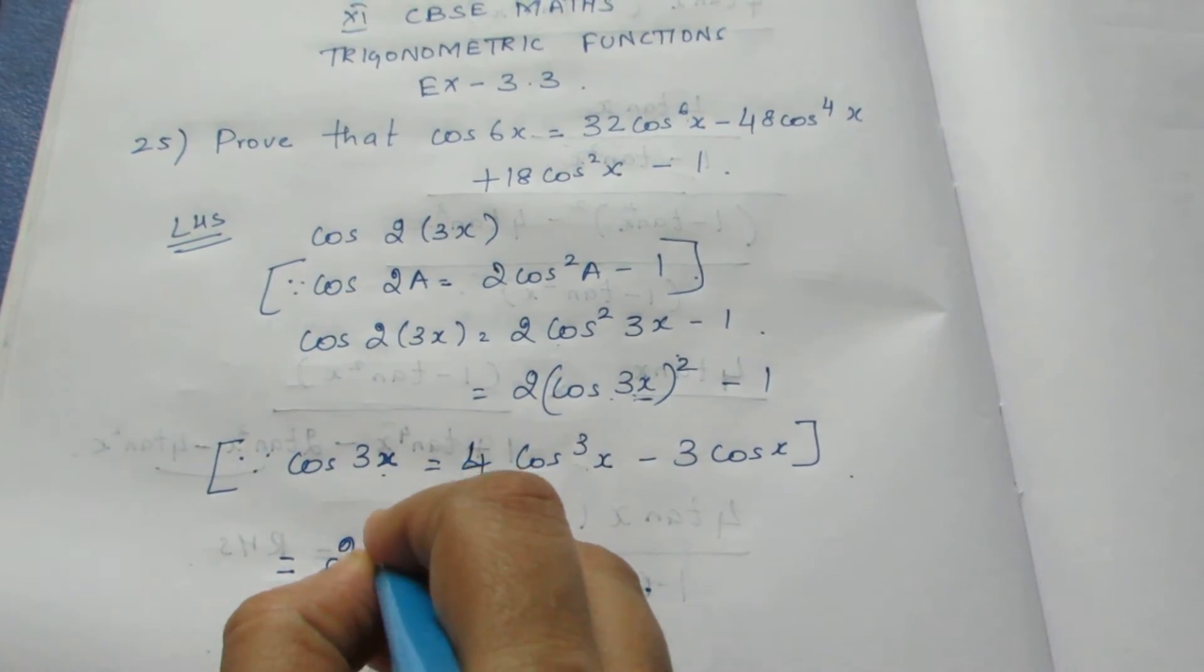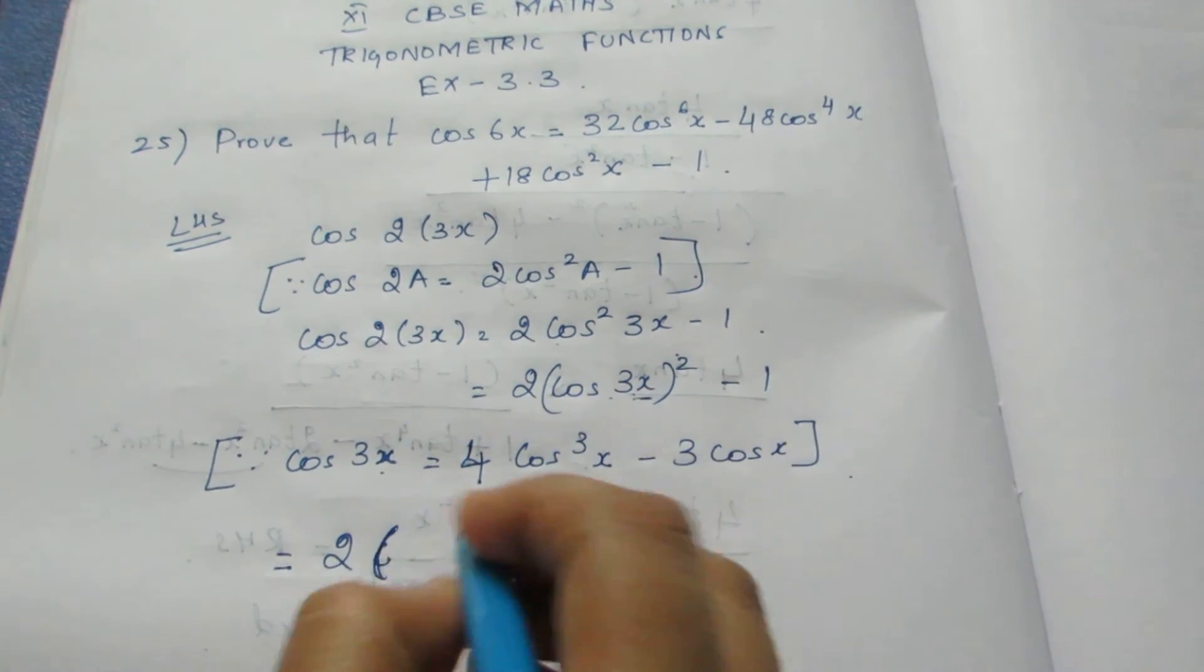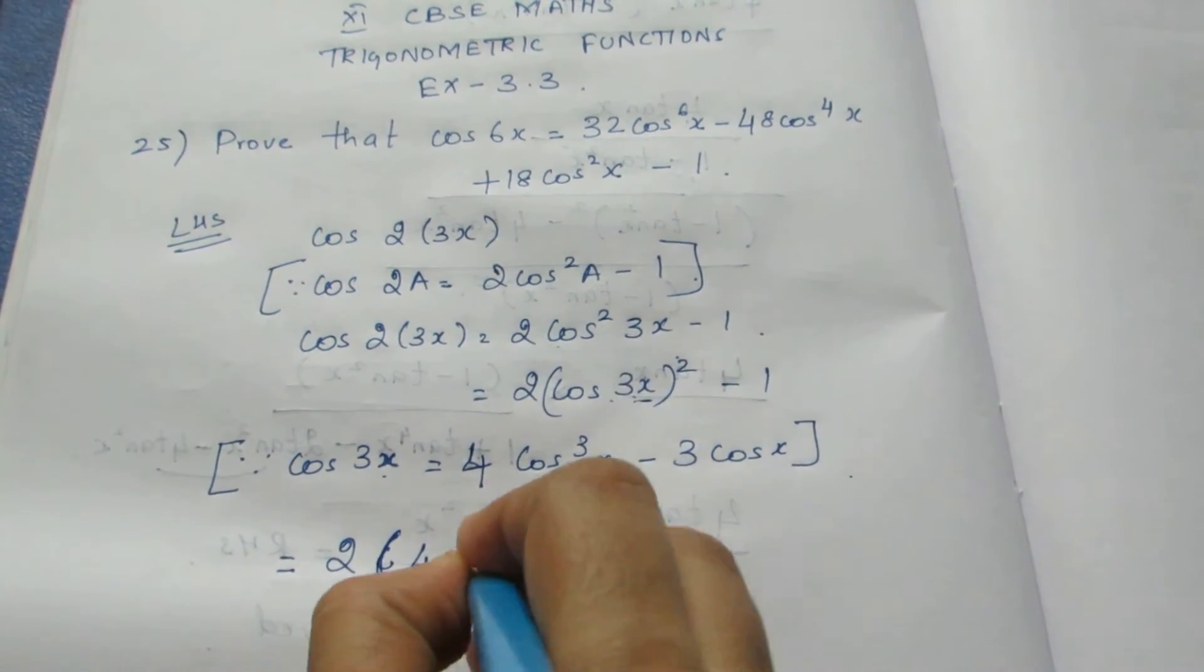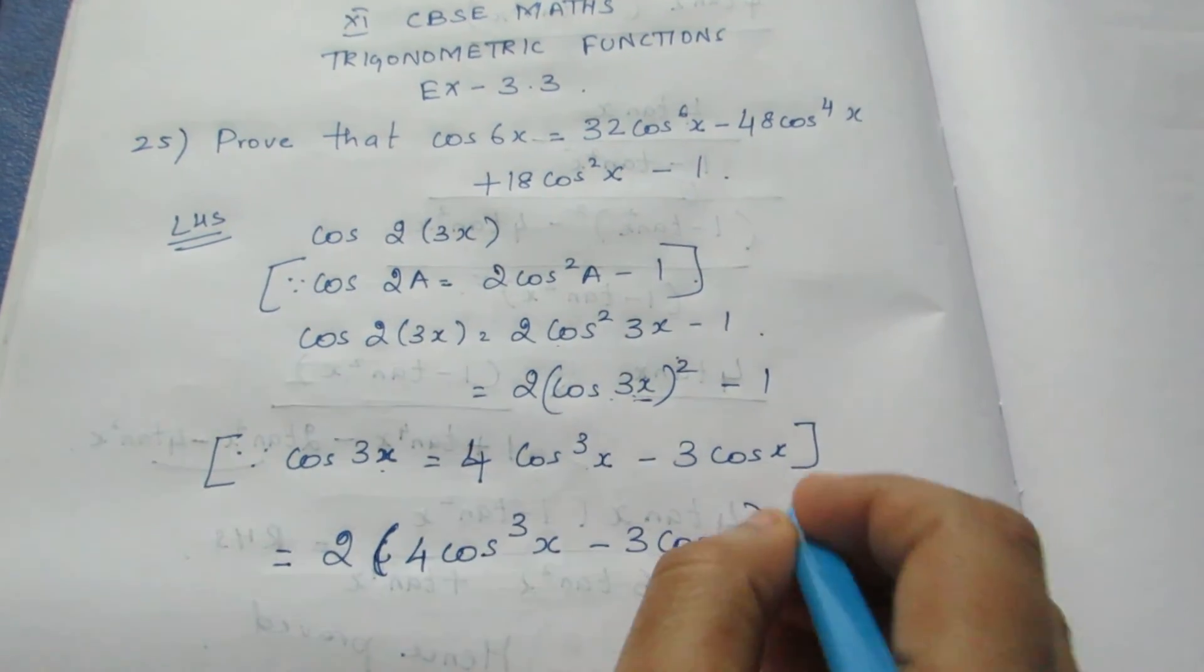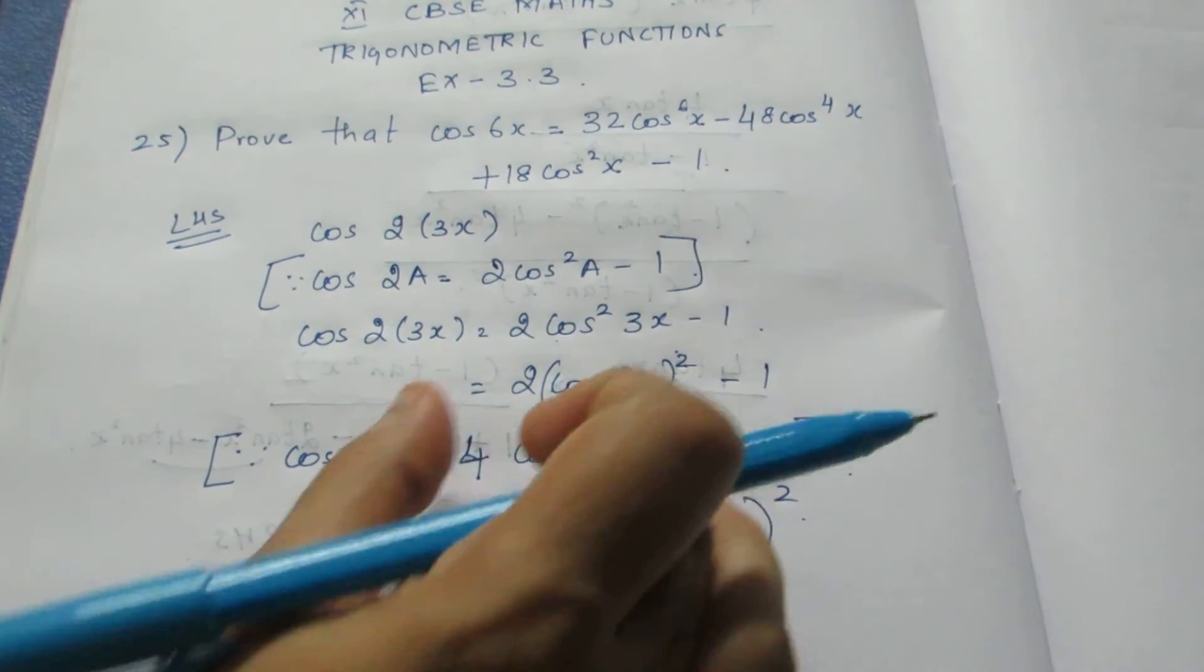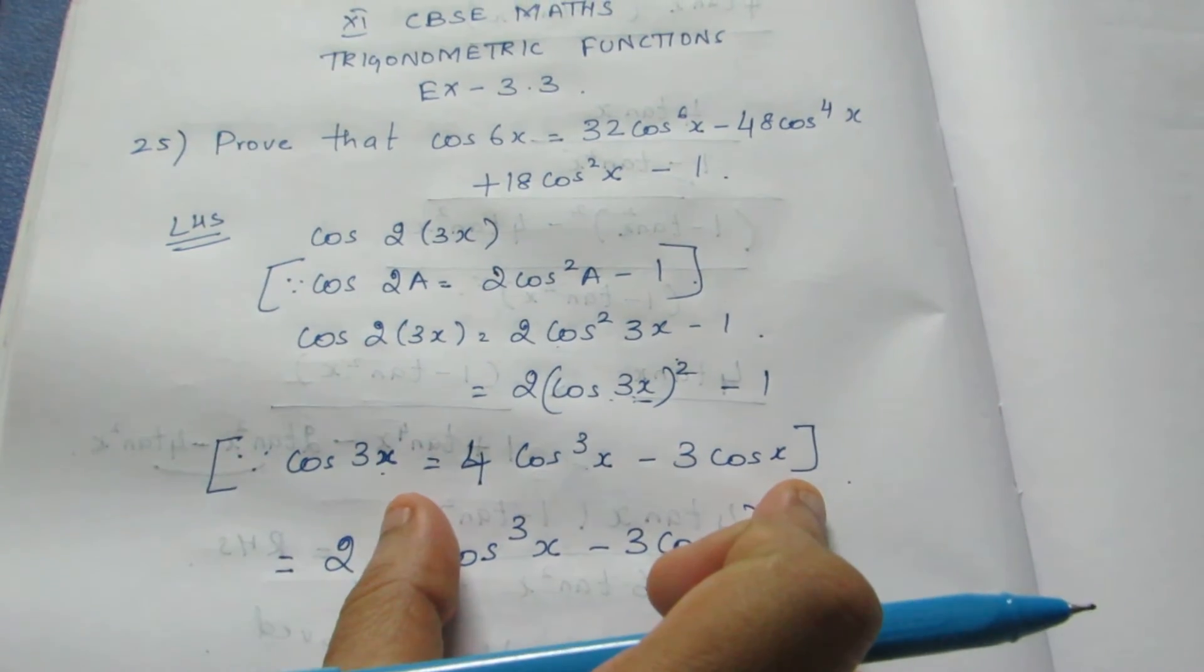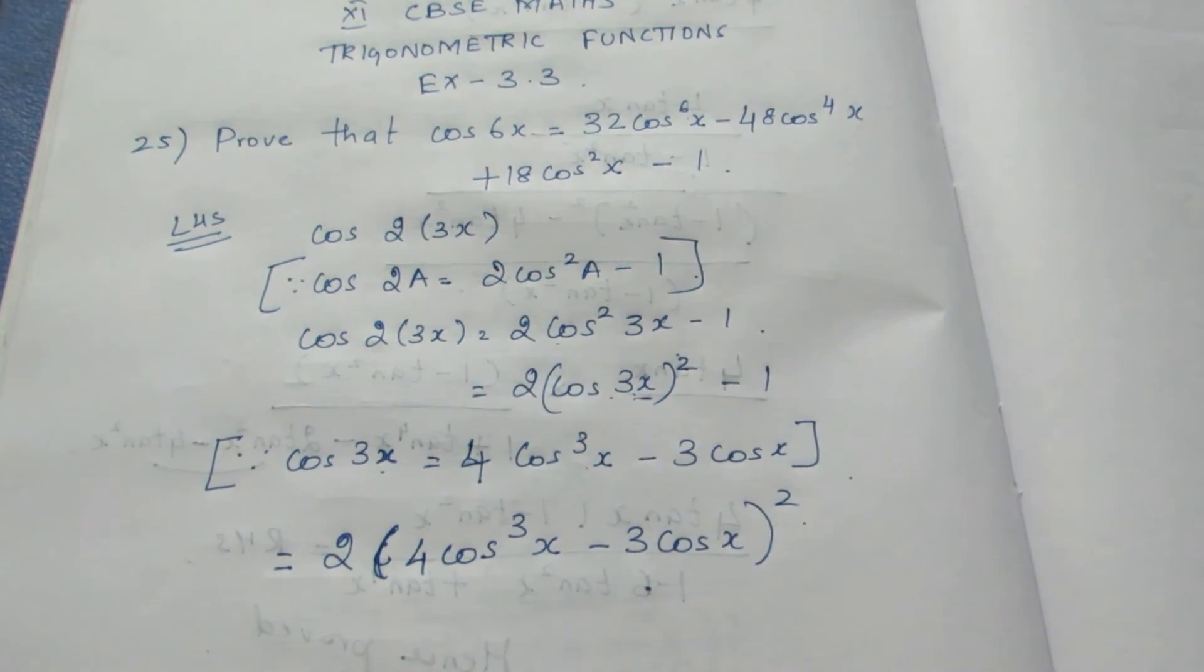Now this becomes 2 into the bracket (4 cos³x minus 3 cos x) the whole square. This is the formula for cos 3x the whole square written as is.